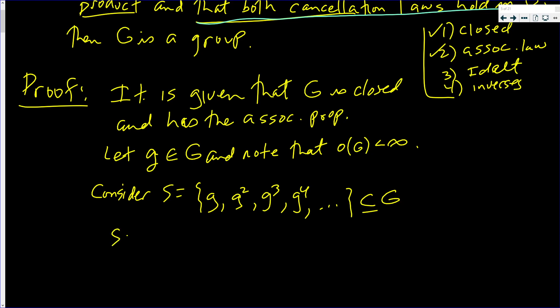Since the order of G is less than infinity, is finite, and it looks like S is infinite, but S lies in G, S is the subset of G. That implies that S has duplicate elements, it has duplications.